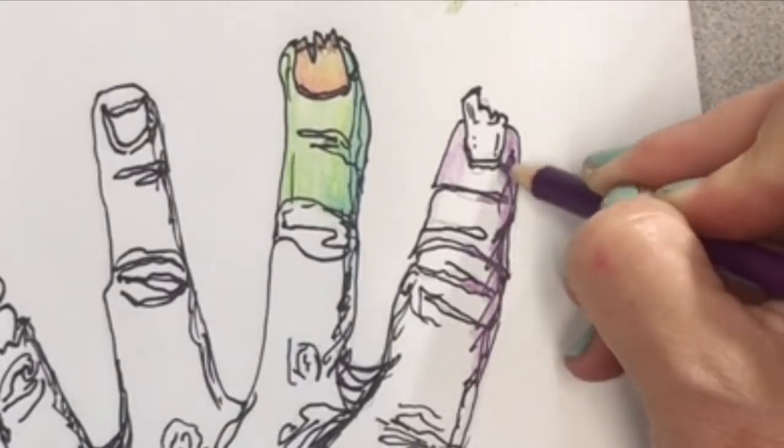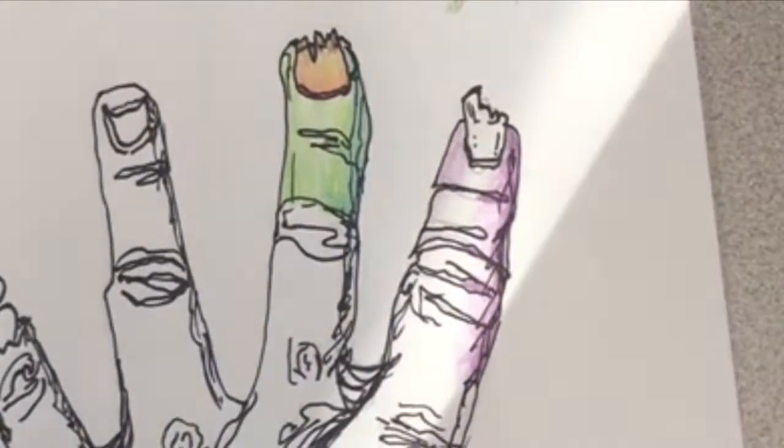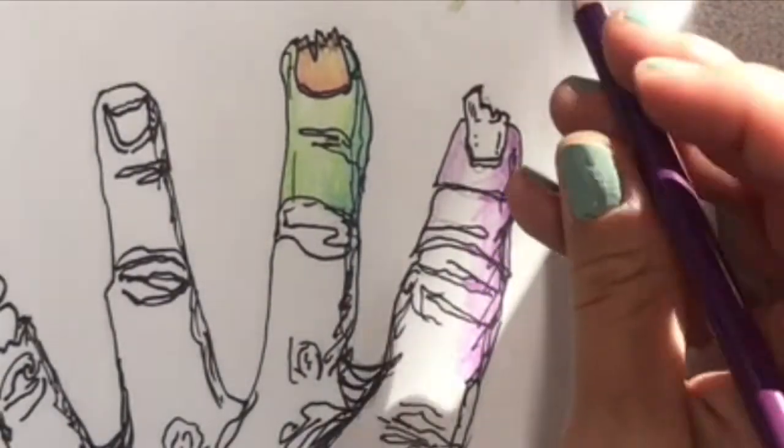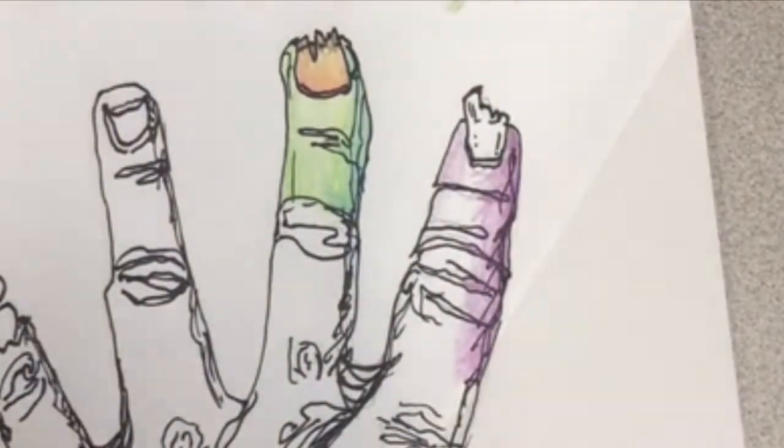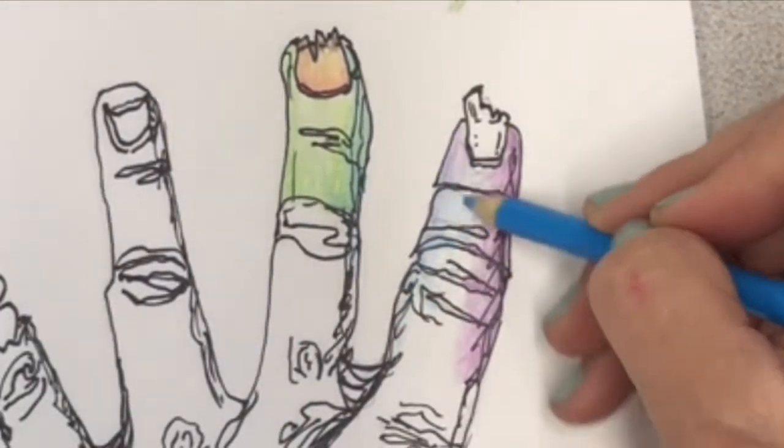Over here I want to get kind of a bruising effect so I'm going to go ahead and start with a purpley color and move on from there. And on my other side I'm going to add some blue underneath.